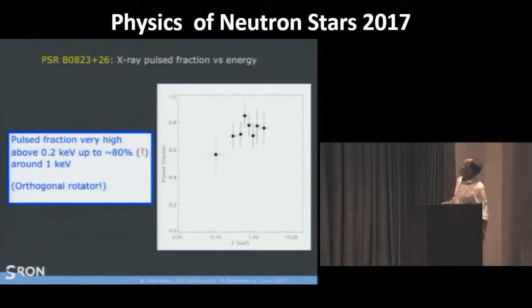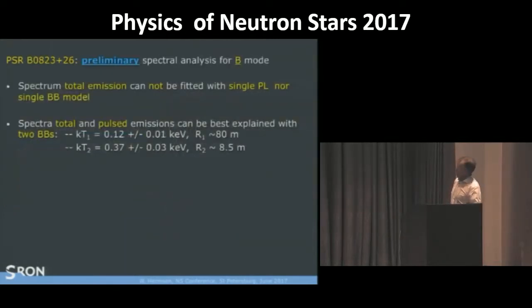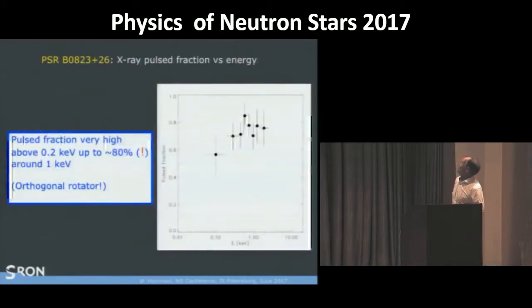And the pulse fraction in the B mode is very high, almost 80%. This is low value, but it's very large error bars. And this for an orthogonal rotator, how do we get such enormous pulse fractions? Also there, you start to think about magnetic beaming, I must say. So this is again very odd.